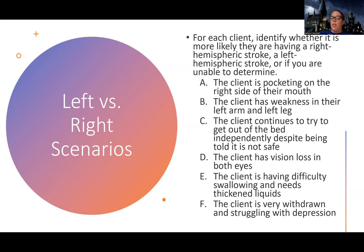Scenario F: the client is very withdrawn and struggling with depression. It could be either, but who is more characteristic of this? The person who had a left hemispheric stroke. Remember — all that is left is emotion. They tend to be very withdrawn, overwhelmed, frustrated, and struggle with emotions. So the final answers are: A left, B right, C right, D unable to determine, E unable to determine, F left.